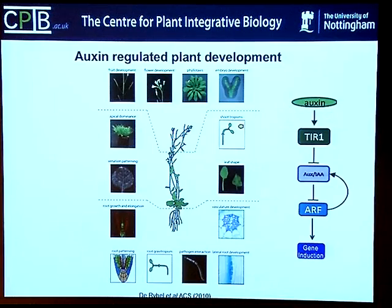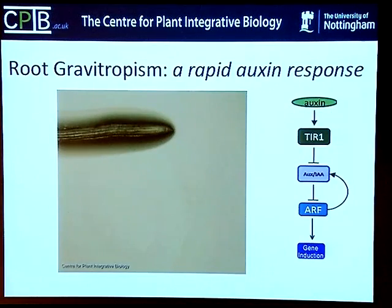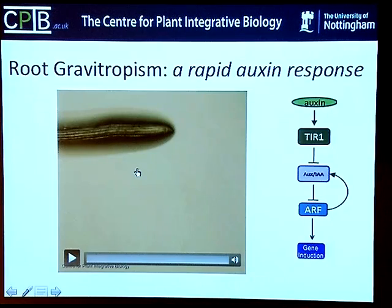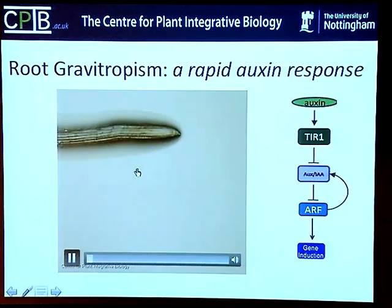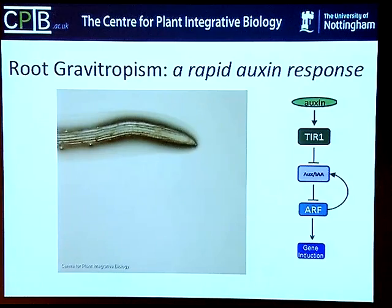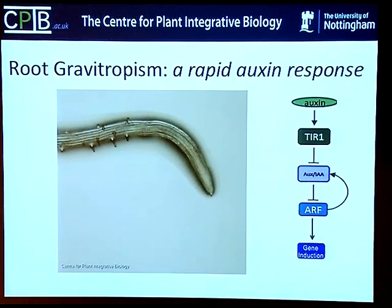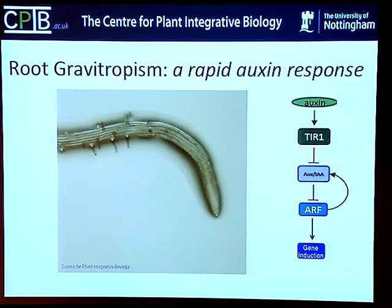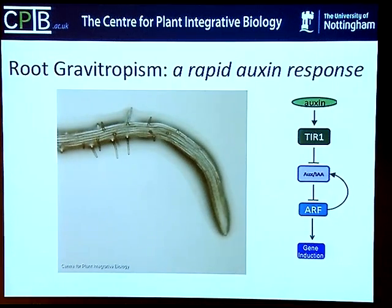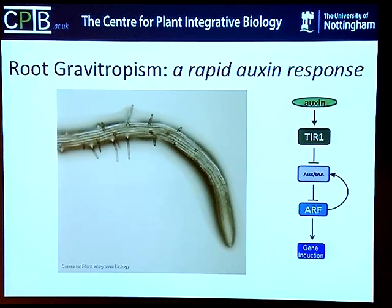If you consider a process such as gravitropism - here's a movie with some timelines. A root given a gravity stimulus shows a change in growth in the elongation zone within 10 to 20 minutes; by about 2 hours you're almost halfway through the bend; and by 6 hours you've completed the bending response. The question is: how relevant is the signaling pathway to this process?